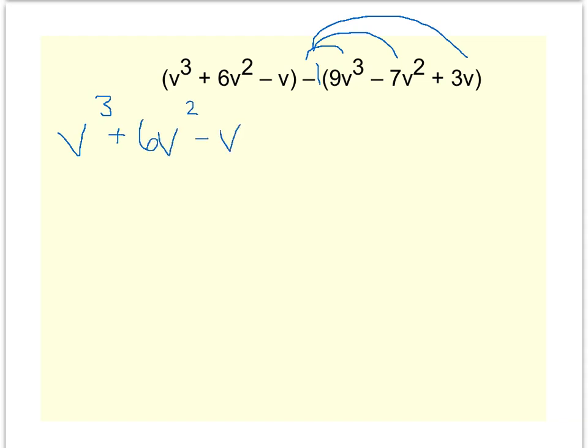And then when I write my second one, I'll just basically do the opposite sign. Negative one times 9v³ is negative 9v³. Negative one times negative 7v² is plus 7v². Negative one times positive 3v is minus 3v.